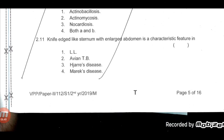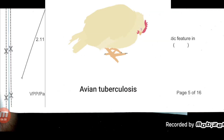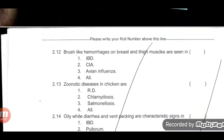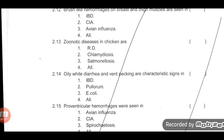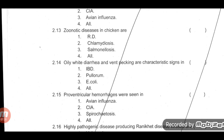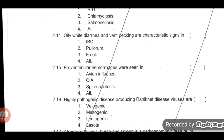Knife-edged sternum with enlarged abdomen is a characteristic feature of avian tuberculosis — second option is correct. It is a type of Mycobacterium avium infection. Brush-like hemorrhages on breast and thigh muscles are seen in IBD (Infectious Bursal Disease) — first option is correct. Zoonotic diseases in chicken include Ranikhet disease, chlamydiosis, and salmonellosis — all are correct, option four.